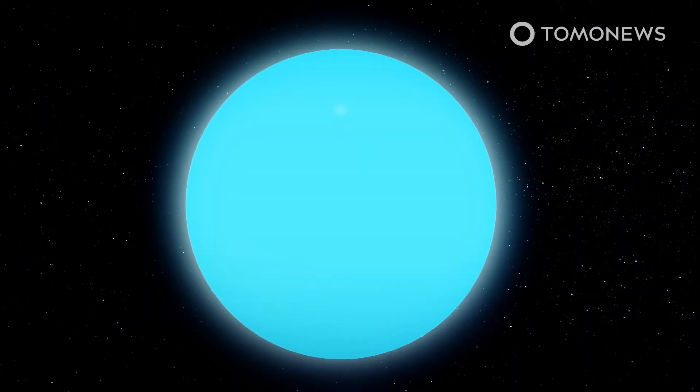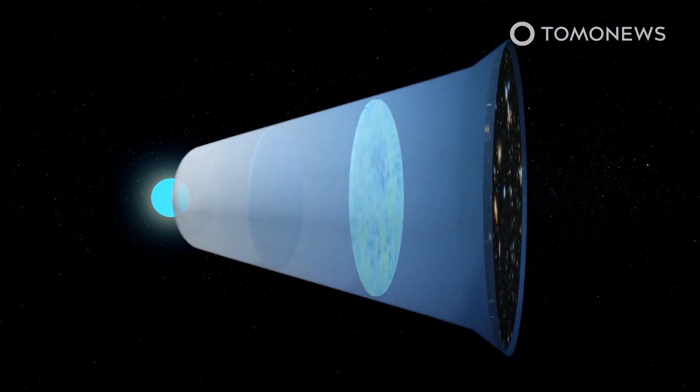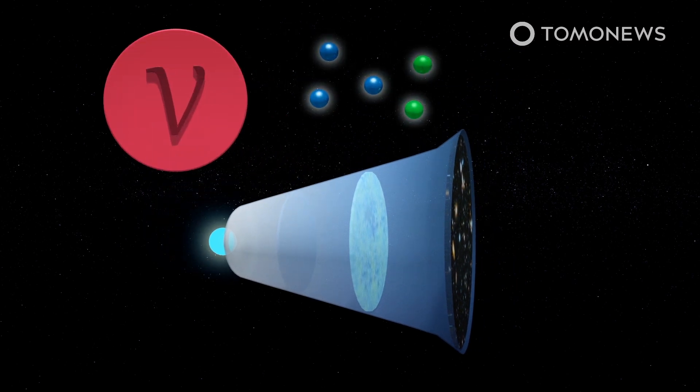In a study published in Physical Review Letters, researchers say that after the Big Bang, the early universe must have gone through a phase that allowed neutrinos to create more matter than antimatter.